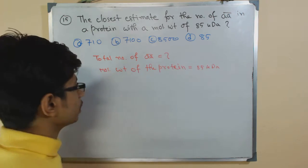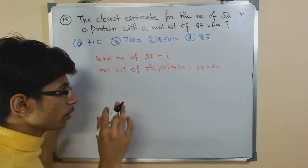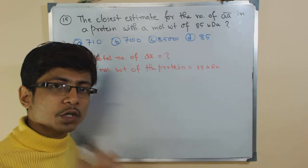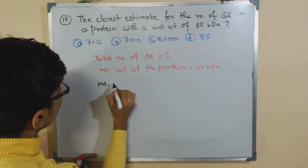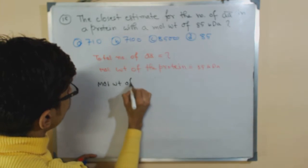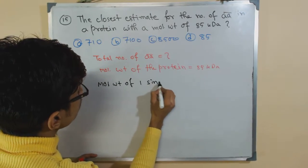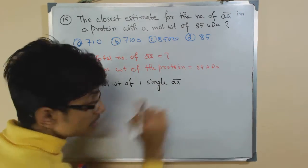I'm going to give you a suggestion - keep this in mind, write it down somewhere. The molecular weight of one single amino acid is considered to be approximately, for all the math problems we are solving, approximately 110 dalton. That is the formula.